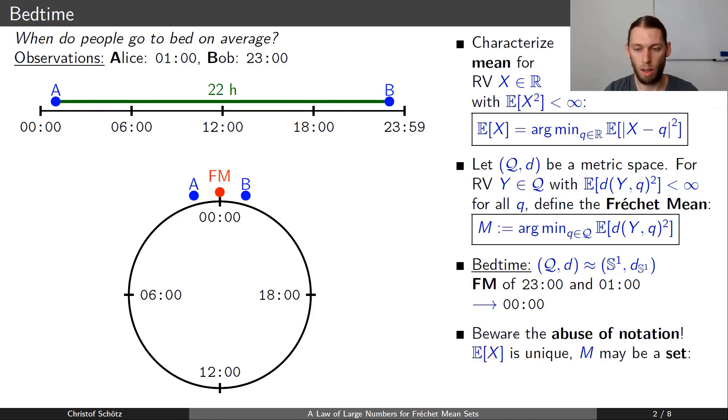Now I have to call your attention to an abuse of notation that I made here, because above here the expectation is actually the unique minimizer of this term on the right hand side, whereas at the Fréchet mean, there might be several elements that minimize this expectation, so that M, the Fréchet mean, is actually usually a set.